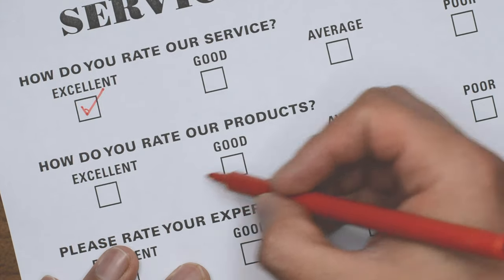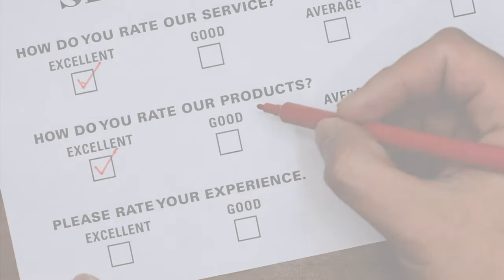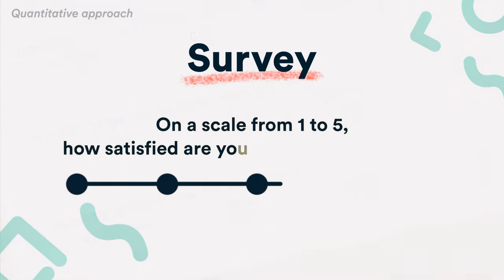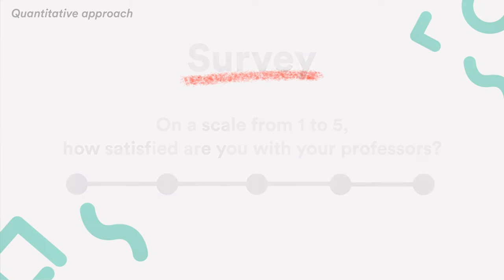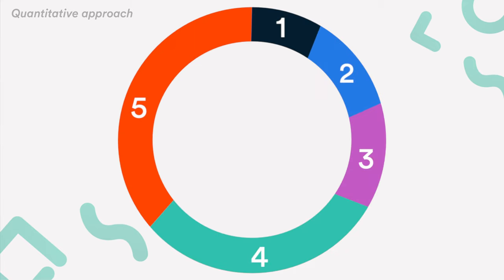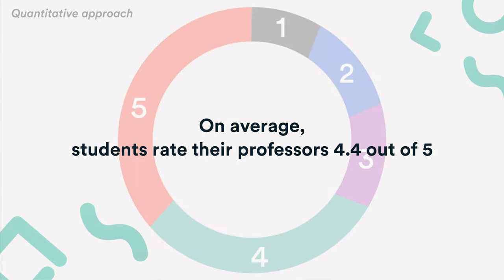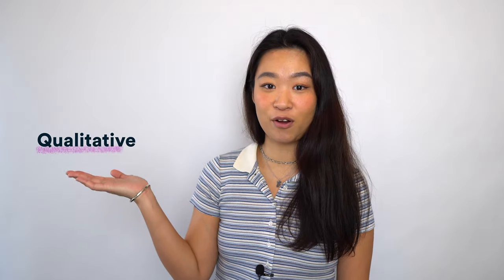If I'm taking the quantitative approach, I can survey 300 students at the university and ask them questions like, on a scale from 1 to 5, how satisfied are you with your professors? With the collected data, I will run a statistical analysis and draw conclusions that might sound something like, on average students rate their professors 4.4 out of 5.